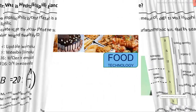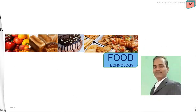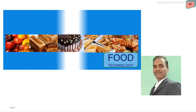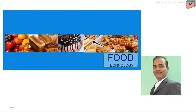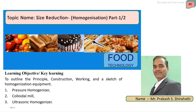Welcome to all of you. In the second part of the size reduction equipment, in this video discussion, you will learn the homogenization process. Homogenization is one of the most important unit operations for liquid food processing. In this video discussion, you will learn the principal construction and working sketch of the main homogenization equipment which are involved in the food processing industry.